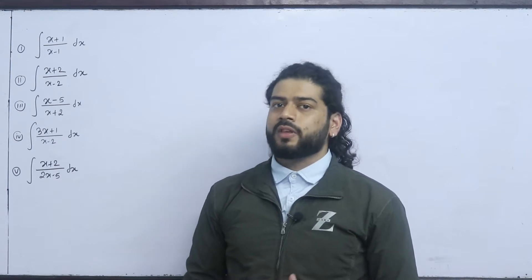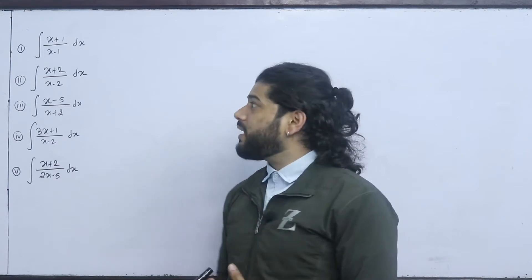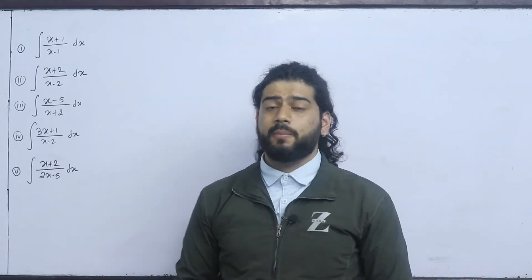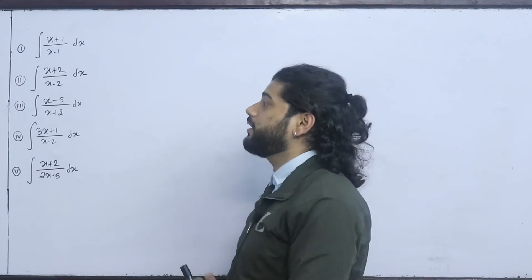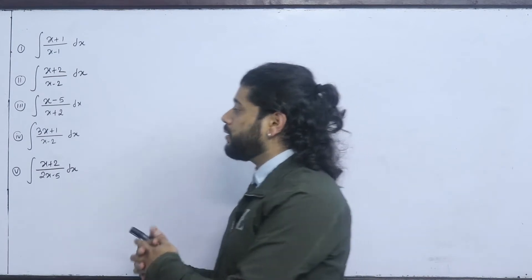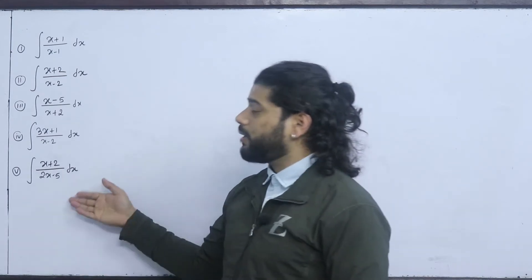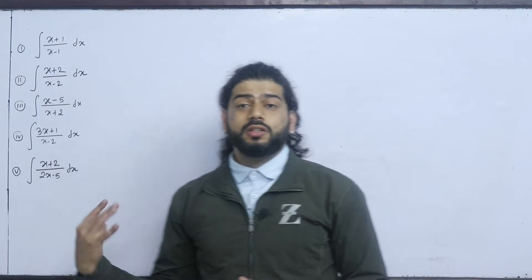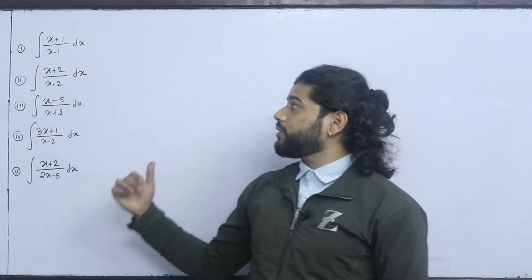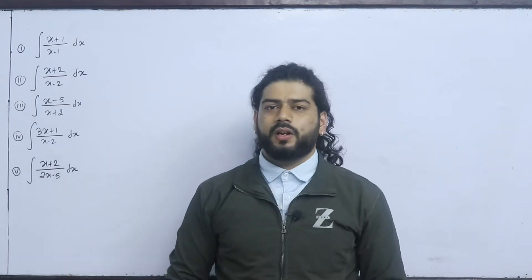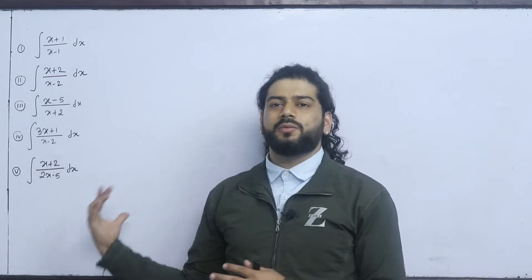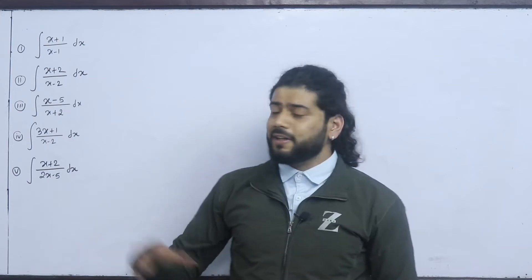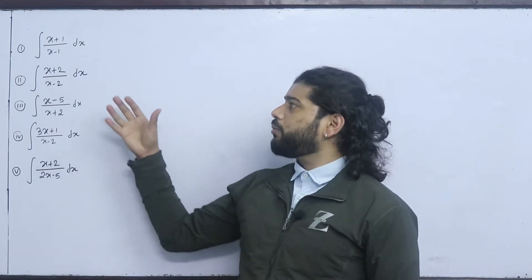There are questions that would be solved — this is the remaining part from before. This category involves about 500 questions. The types of questions we will solve: if you have this formula, you can apply it directly.